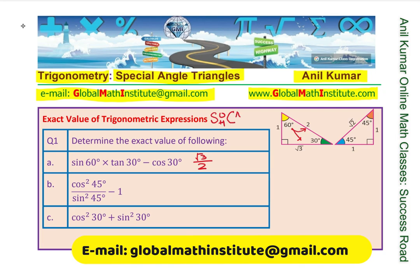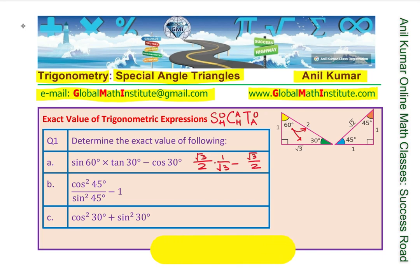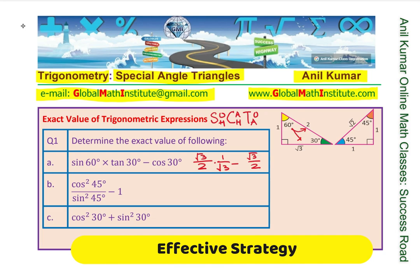Remember: sine is the ratio of opposite over hypotenuse, cosine is adjacent over hypotenuse, and tan is opposite over adjacent. So sin60 equals square root 3 over 2. For tan30, looking from 30 degrees, tan is opposite over adjacent, which is 1 over square root 3. And cos30 is adjacent over hypotenuse, which is square root 3 over 2. So we have all these values.